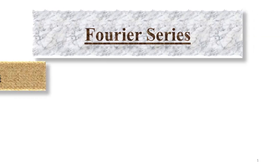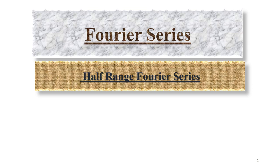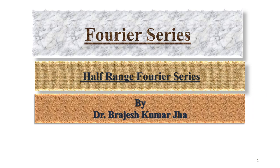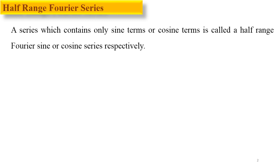Welcome to the video lecture series of engineering mathematics. In this section we are going to discuss about Fourier series, specifically the topic of half-range Fourier series. Earlier you studied the full-range Fourier series of periodic functions with period 2π and 2L, and the Fourier series of even and odd functions. A series which contains only sine terms or cosine terms is called a half-range Fourier sine or cosine series respectively.